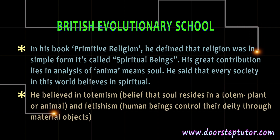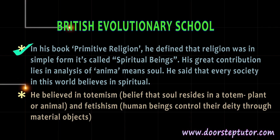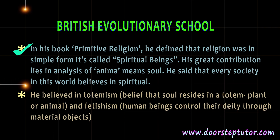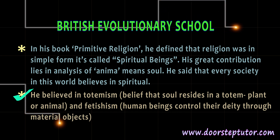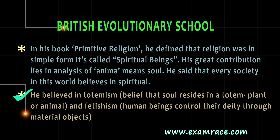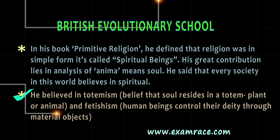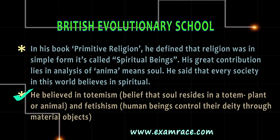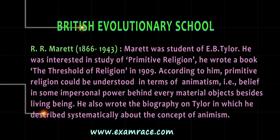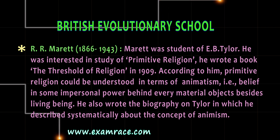In his book Primitive Religion, he defined that religion was in its simple form, called spiritual being. His great contribution lies in the analysis of anima, meaning soul. He said that every society in the world believes in spirituality. He believed in totemism, i.e., the belief that the soul resides in a totem — a plant or animal — and fetishism, which means human beings control their deity through material objects.